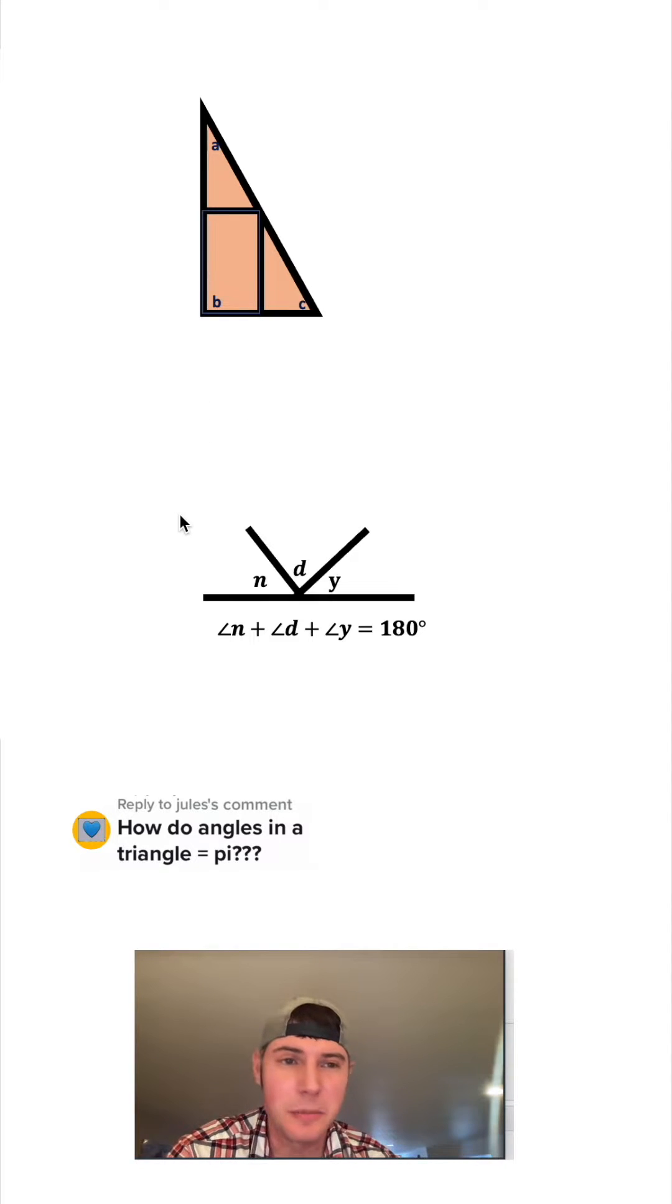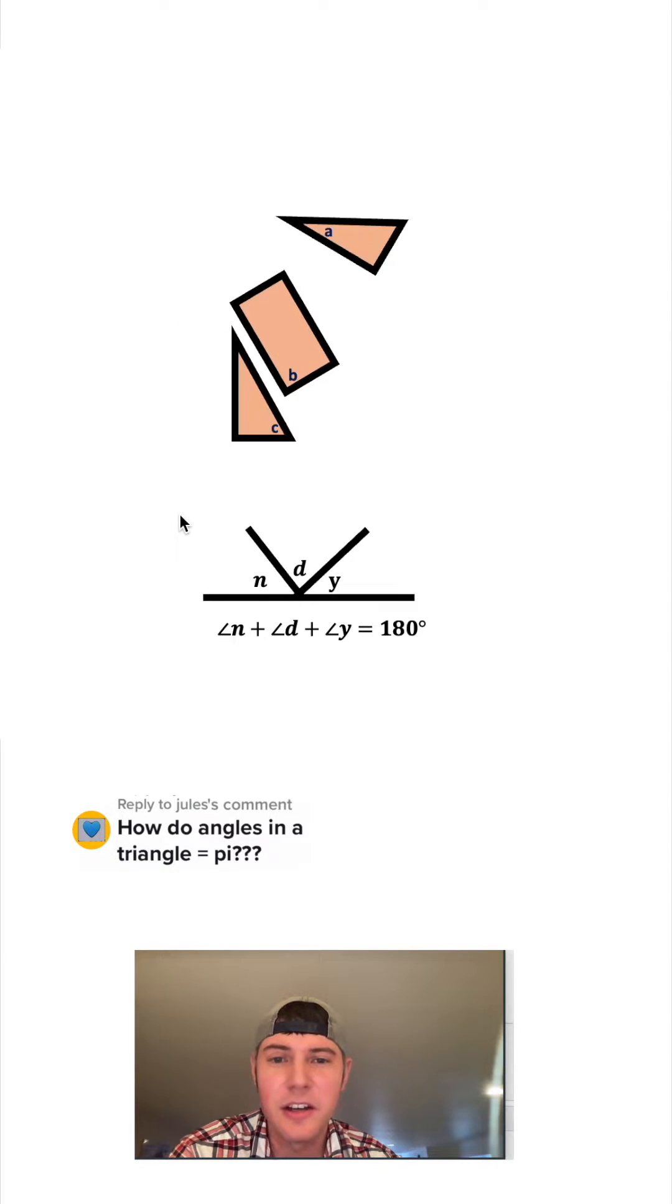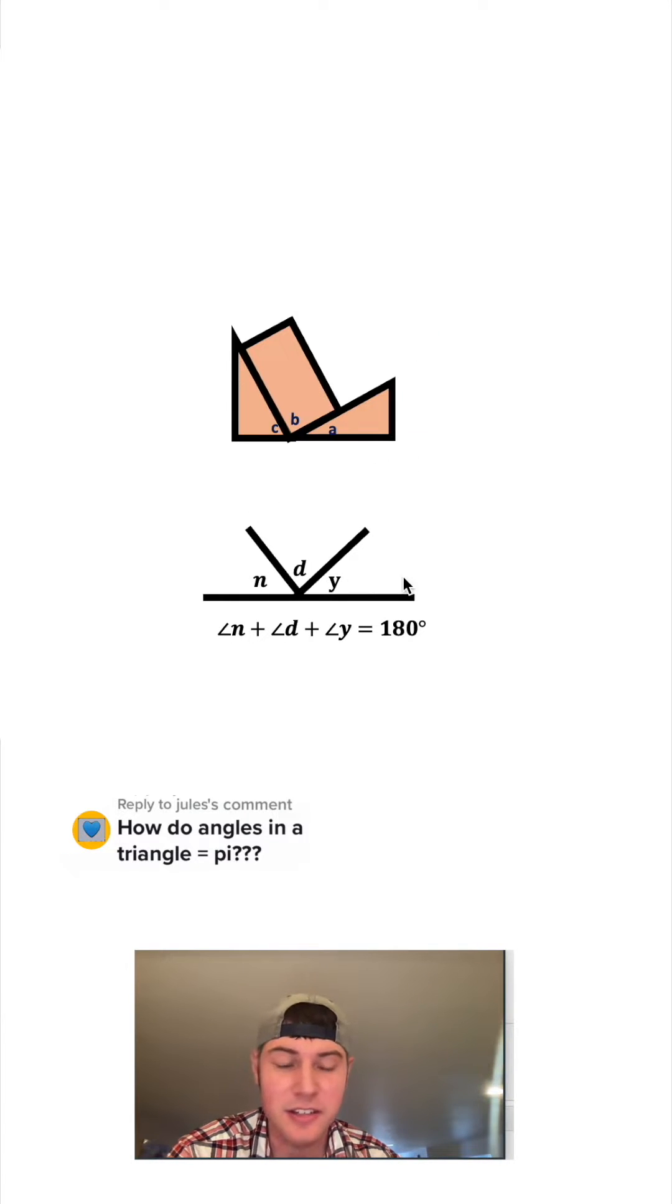We take our triangle, break it up into pieces and bring it down here. You can see that the A, B, and the C form 180 degrees, just like this line right here. These are the same A, B, and C that were in the triangle up above. So we can then conclude that A plus B plus C equals 180 degrees.